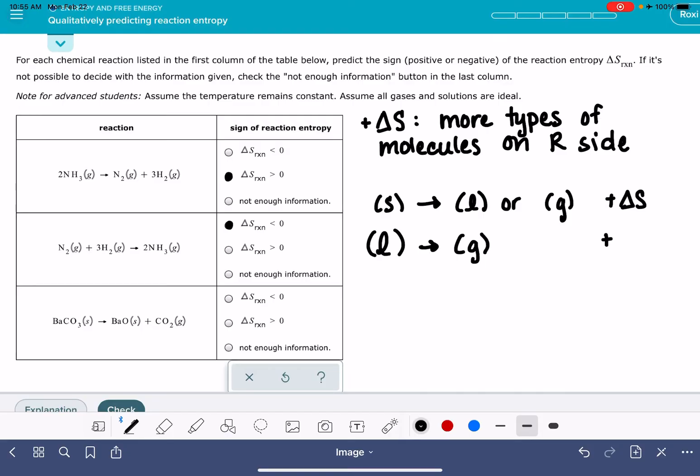If we're going the other way with it, so if we have a gas that is being converted into either a solid or a liquid, that would be a negative change in entropy. Or a liquid that is being converted to a solid, that would also be a negative change in entropy.